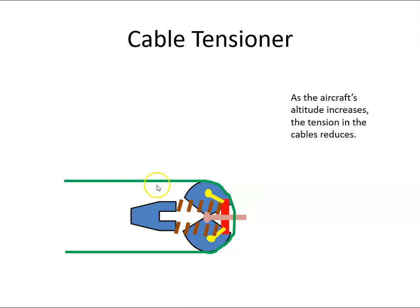As the aircraft climbs, the tension here in the control cable slackens off and the response of the flight controls to pilot input can become sloppy.